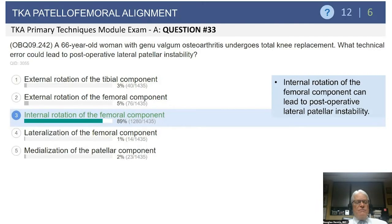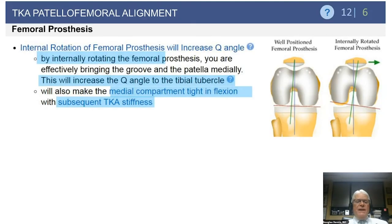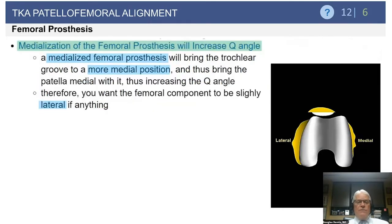External rotation of the femoral and tibial components typically helps patellofemoral capture, as does lateralization of the femoral component or medialization of the patellar component. If you internally rotate the femur, you increase the Q angle and bring that trochlear groove medial away from the patella. Another adverse effect is that internal rotation of the femoral component leads to under-resection of the posterior aspect of the medial femoral condyle, resulting in medial flexion gap tightness and a stiff total knee arthroplasty.